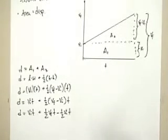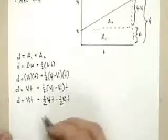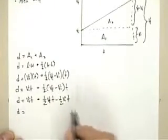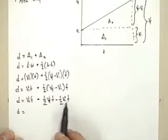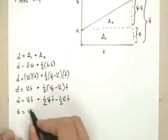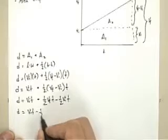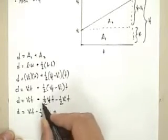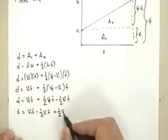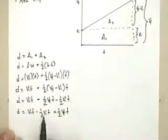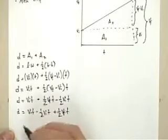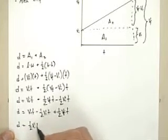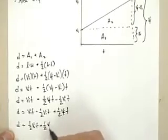Now I'm going to combine my like terms. And so what that will give me then, d equals, I'm going to take my minus 1 half vi t. And I'm just going to combine over here. Vi t minus 1 half vi t plus 1 half vf, t. Vi t subtract half of a vi t is going to leave you with 1 half of a vi t plus 1 half of a vf, t.